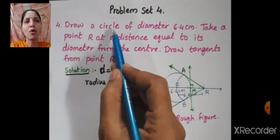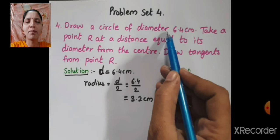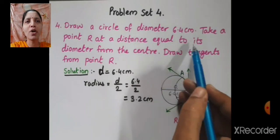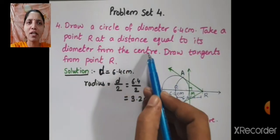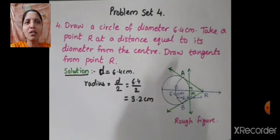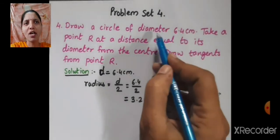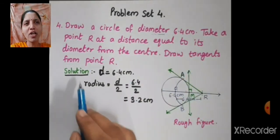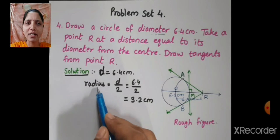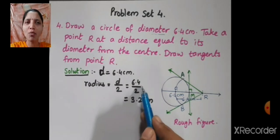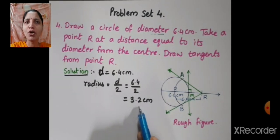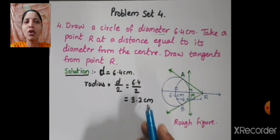Fourth sum from problem set 4: draw a circle of diameter 6.4 cm. Take point R at a distance equal to its diameter from the center. Draw tangents from point R. So, what is given to us? Diameter is given instead of radius. Can you find radius from the diameter? Radius is equal to diameter upon 2, that is equal to 6.4 upon 2, that is equal to 3.2 cm. So, we got the radius.